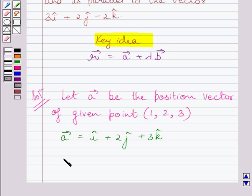We are also given that the line is parallel to 3i plus 2j minus 2k. So we can write, let b vector equal 3i plus 2j minus 2k.